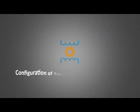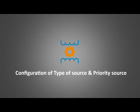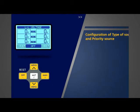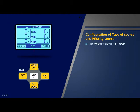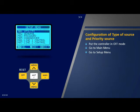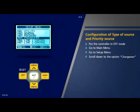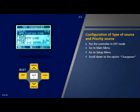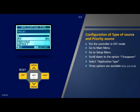Configuration of type of source and priority source: The method for configuration of the type of source — utility or DG — is as follows. Put the controller in off mode, go to main menu, scroll to setup menu and press OK. Select option 5 which is 'Change Over' and press OK. The change over page will appear. Select the parameter 'Application Type' and press OK. Three options are available: UG (utility-generator), UU (utility-utility), and GG (generator-generator). Select an option, for example UG, and press OK.